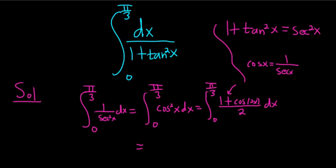We can break this up into two integrals, so it's 1 over 2 times the integral from 0 to pi over 3 of 1 dx, plus the integral from 0 to pi over 3 of cosine 2x over 2 dx. Let's pull out that 1 half, that's how pros do it.